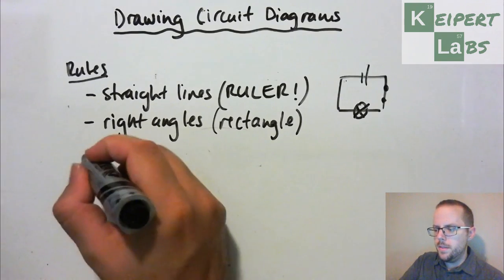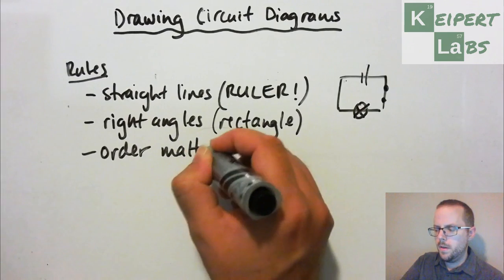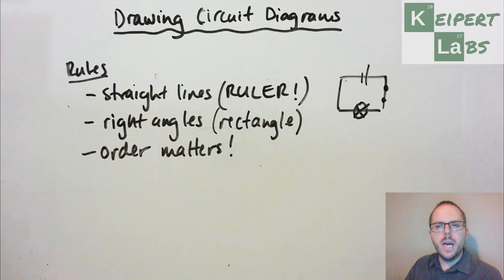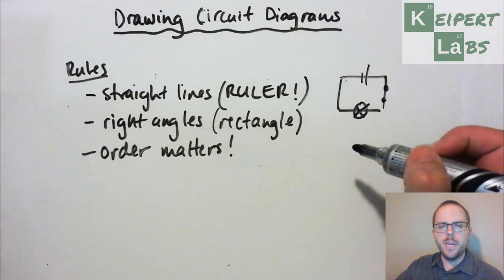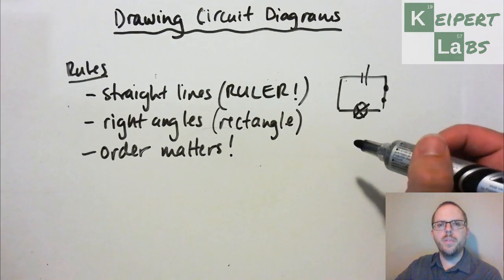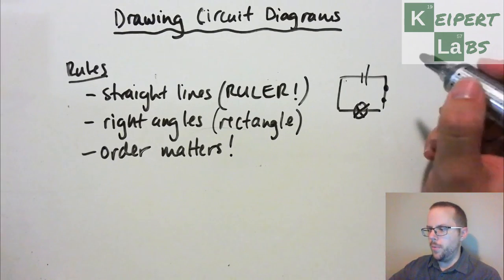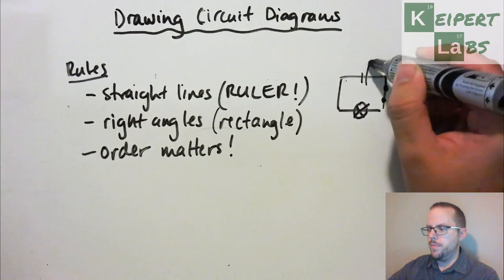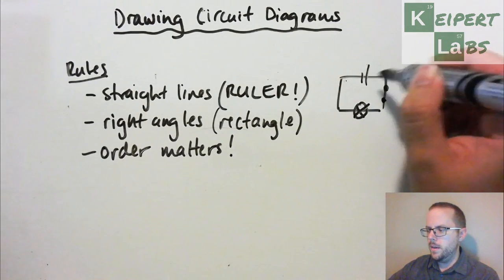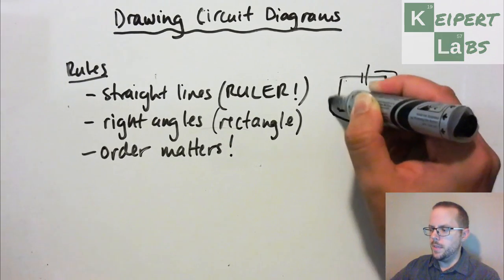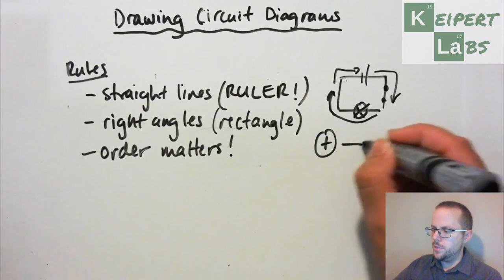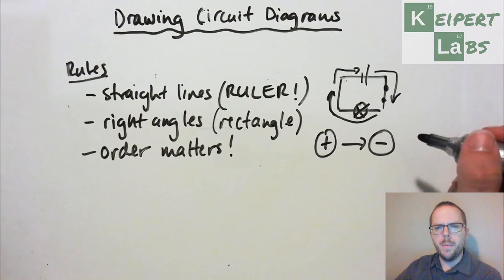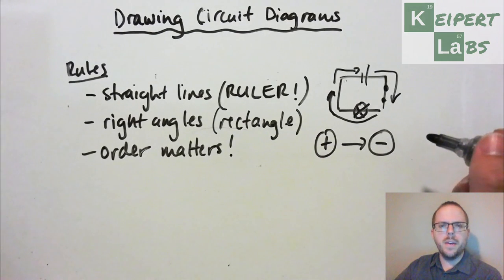And so the order matters. Alright, so what we're saying here is that electricity flows around a circuit in one particular direction. So that this current, this flow of particles will flow around in a given direction. And what it does is it actually flows around from the positive end which is the long line all the way around to the other end which is the negative, which is the short line. So it goes from positive to negative, the current.